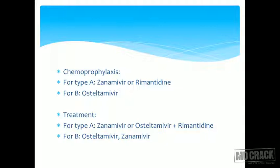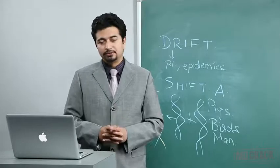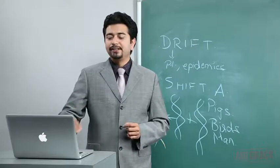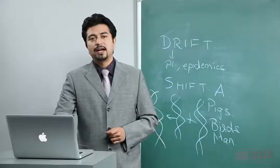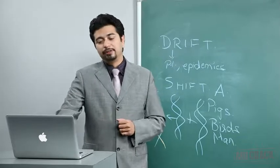Chemoprophylaxis has been revised. For type A, zanamivir is used; if not available, remantidine is an older option. For type B, oseltamivir is used. For treatment: type A uses zanamivir or the other two drugs if unavailable; type B infection is treated with oseltamivir and zanamivir. The drugs for chemoprophylaxis and treatment are essentially the same.